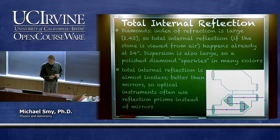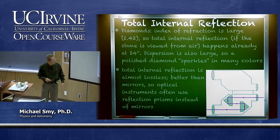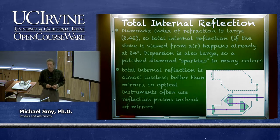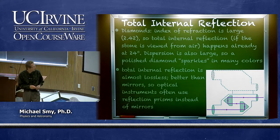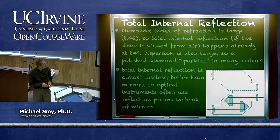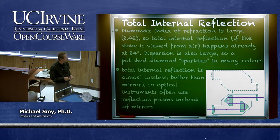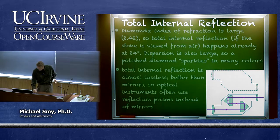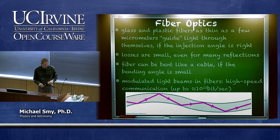Another application of total internal reflection is in binoculars. Instead of mirrors, reflection prisms are used to invert the image, since the primary image produced by binoculars is inverted and needs to be corrected. Two reflection prisms accomplish this. They work better than mirrors because total internal reflection is nearly lossless — reflectivity is very close to 100% — whereas even the best mirrors cannot match that. Therefore, many reflections can occur with very little loss.